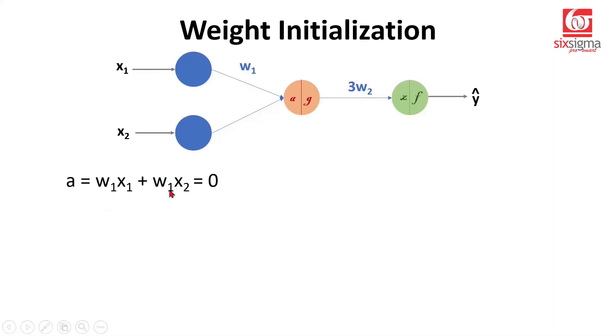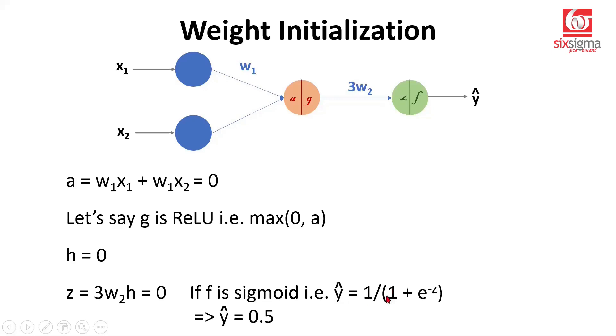In the cases where W1s are zeros, you can imagine the aggregation here would be simply zero. And if this G is ReLU, then we will be looking at max of 0 and A, and max of 0 and 0 in this case, which will be again zero. So the output H that we'll get from this activation will again be zero. And when we do a multiplication of 3 times W2H, that aggregation here would again be zero. And if F is a sigmoid neuron, because we are doing a binary classification, we can put this value here in the expression 1 over 1 plus e raised to the power minus Z. Z is zero, so this becomes 1. It is 1 by 2. We'll be predicting Y hat as 0.5.